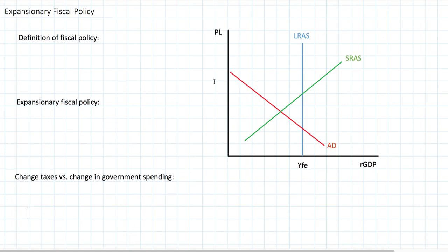In this video, we're going to build on what we've already learned about the aggregate demand and aggregate supply model of a nation's economy. We're moving now on to the government policy section of the course, in which we study different tools that governments and other policymakers have at their disposal in order to achieve certain macroeconomic objectives. The first toolkit we're going to explore is called fiscal policy. We'll start by defining fiscal policy and then talking about expansionary fiscal policy, the situations in which a government would use it, and the effects of two different types on aggregate output and prices.